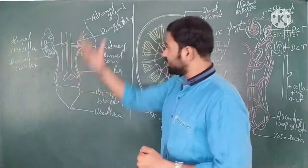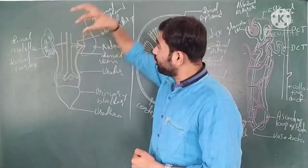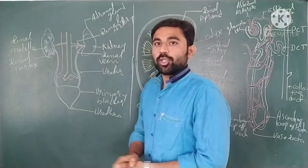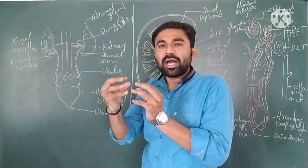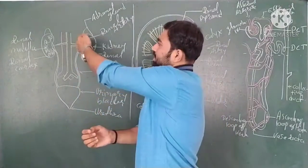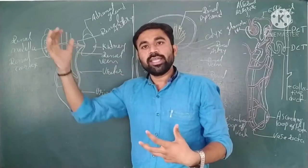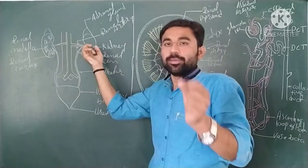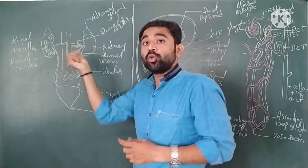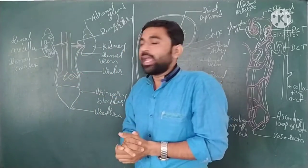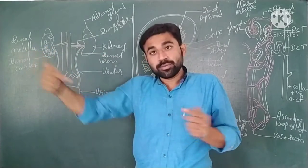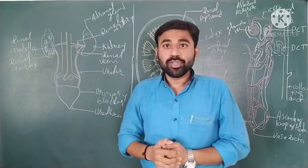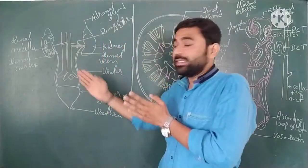Looking at the external side of the kidney, you can see a groove or deep part called the hilum — this is the concave side of the kidney. The kidney has two sides: a convex side and a concave side. The hilum is where the ureter arises, the renal artery enters, and the renal vein exits.